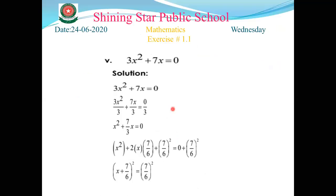Question 5: 3x² + 7x = 0. To solve this, first check if there is a constant on the left side. There is no constant, so we cannot take anything to the right-hand side. The first step does not apply here.